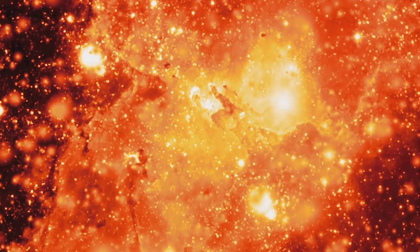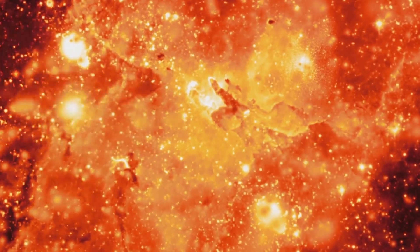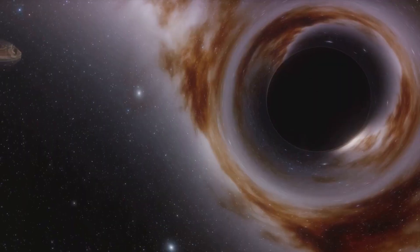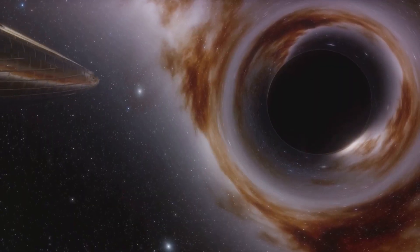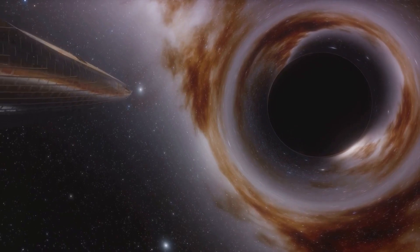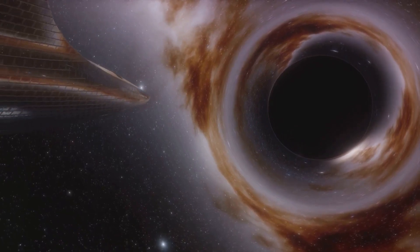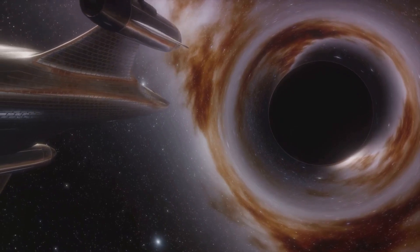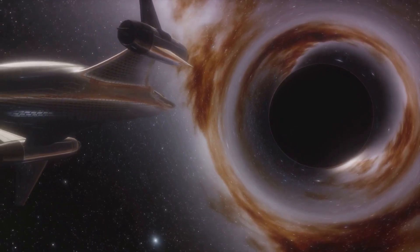These bursts, believed to be the result of massive stars collapsing into black holes or neutron stars, release more energy in a few seconds than our sun will produce in its entire lifetime. If one were to strike Earth, the effects could be catastrophic. It could strip away our ozone layer, exposing us to harmful solar radiation, and potentially even cause mass extinctions.